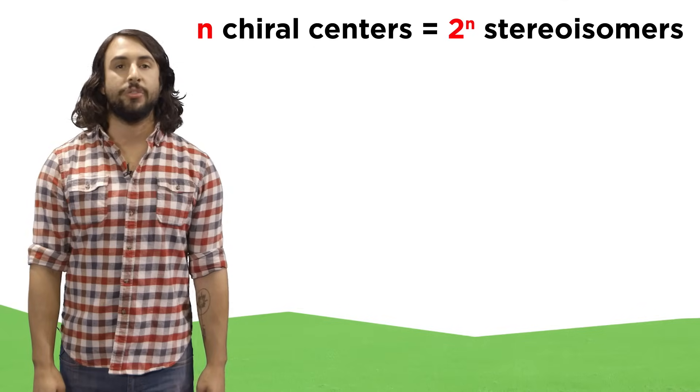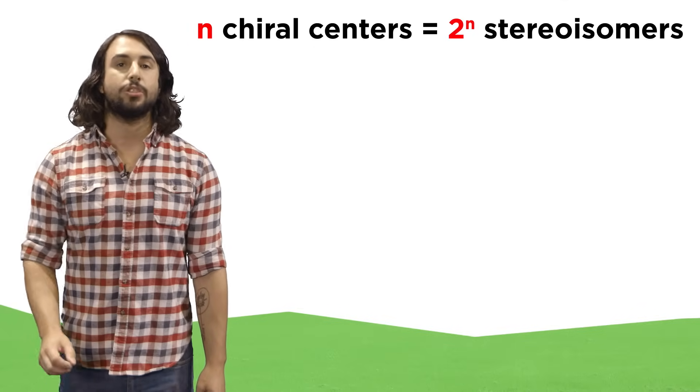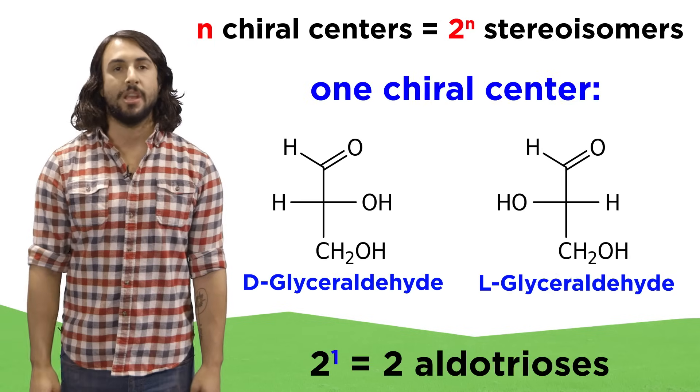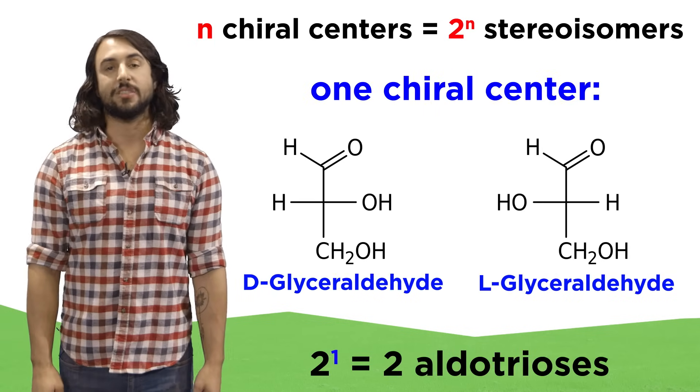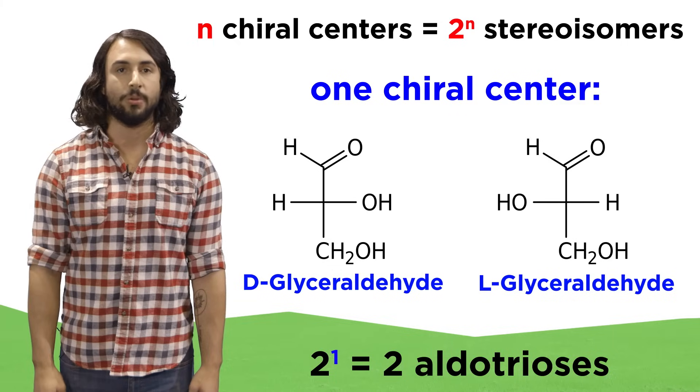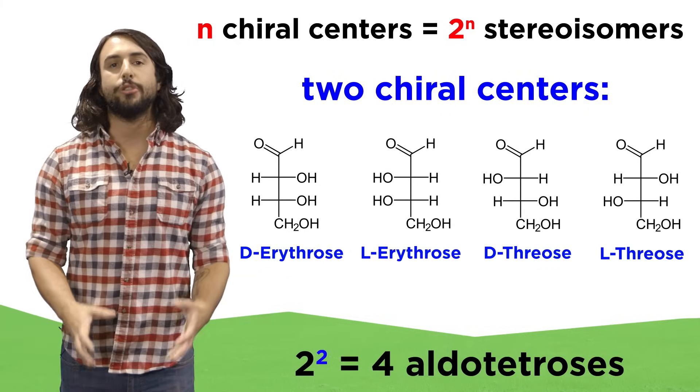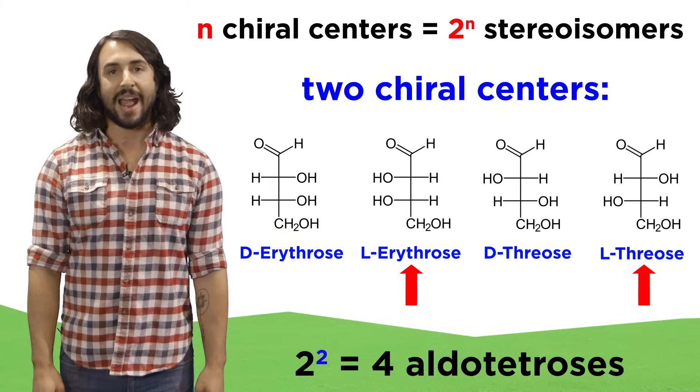Let's also note that since a molecule with N chiral centers has 2^N stereoisomers, there are two aldotrioses, the two glyceraldehydes, since there is only one chiral center on the molecule. There are four aldotetroses, these two and their L enantiomers,